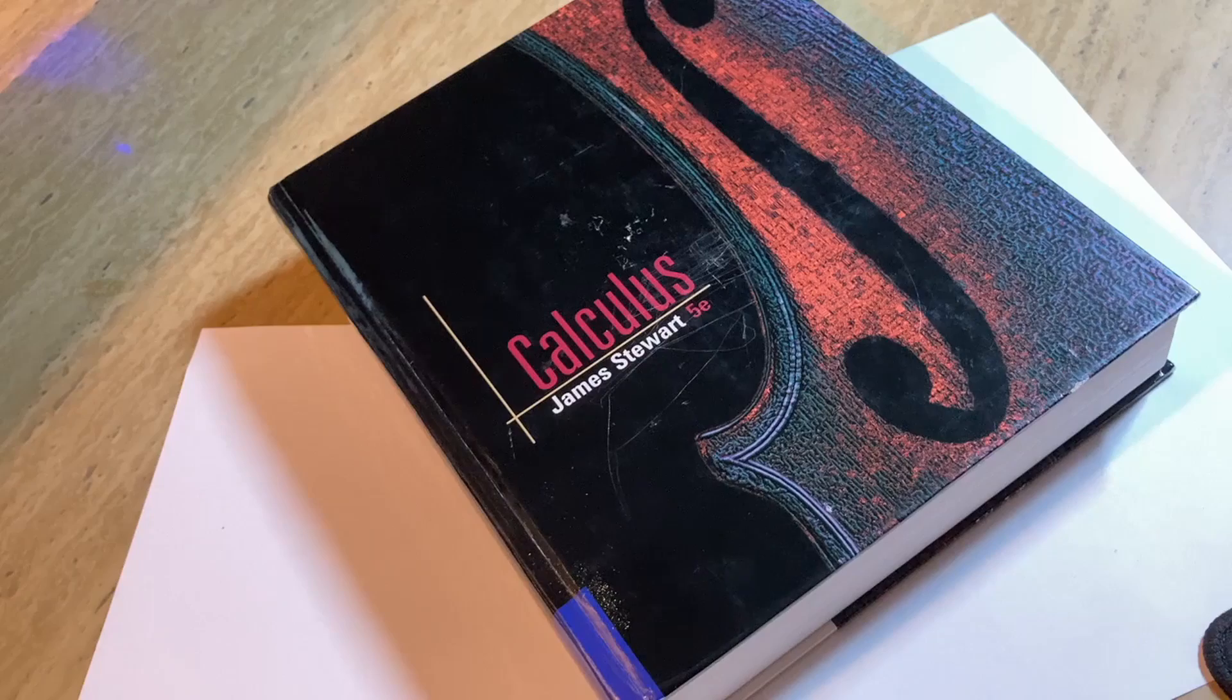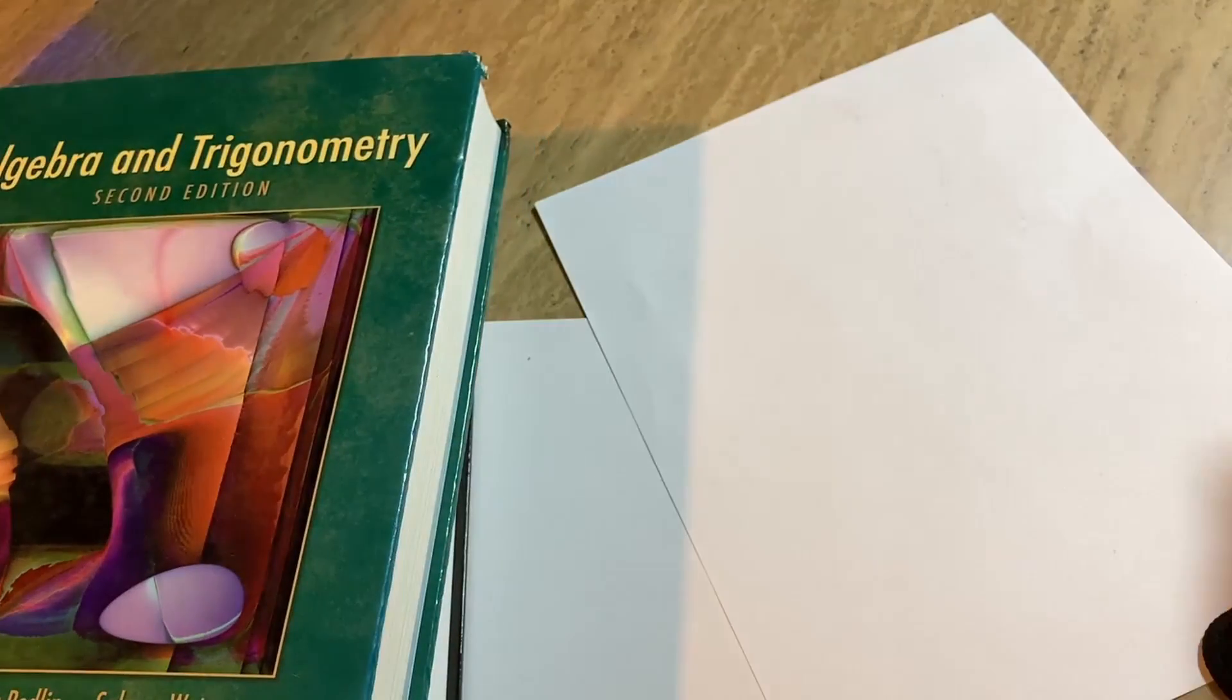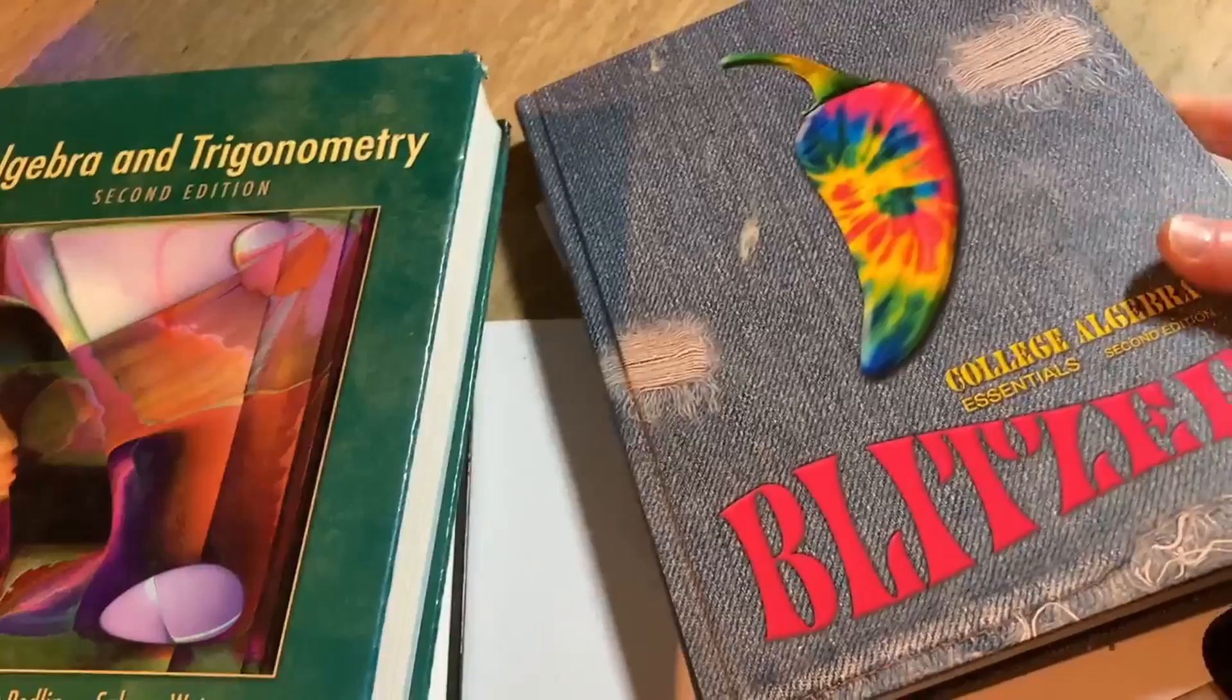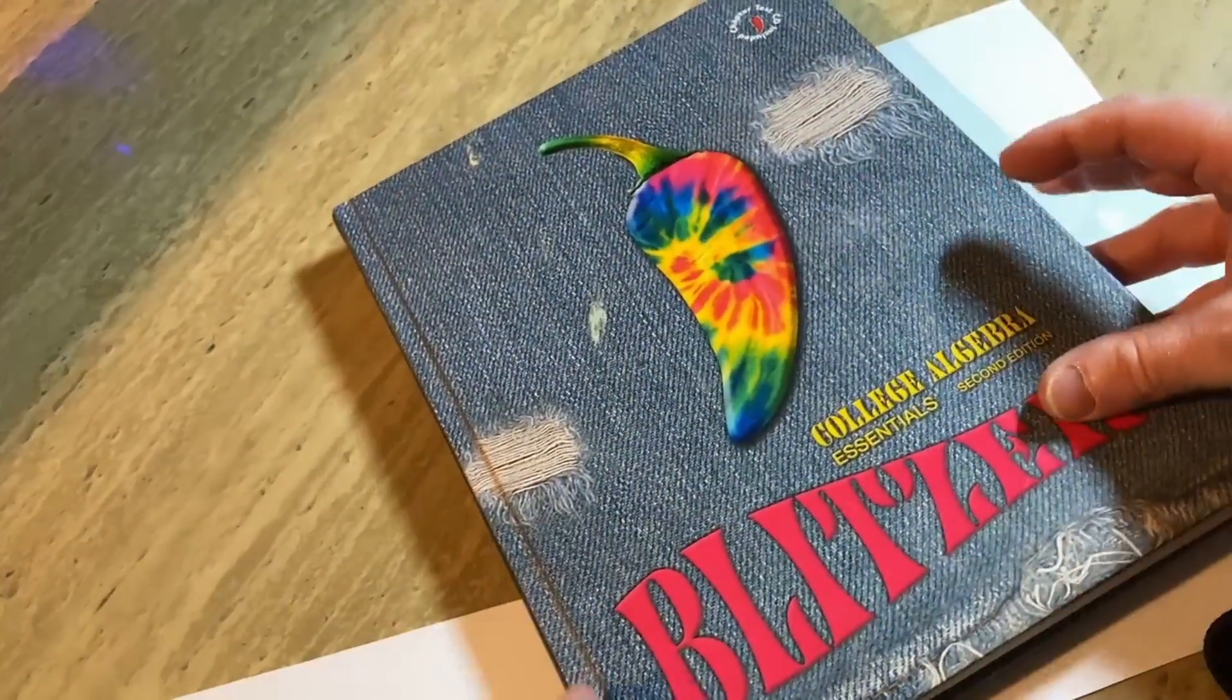Let's start with the very beginning. Let's take a look at the Blitzer book. This is a book that you would use if you were to take a college algebra course here in the United States in college. You would cover quite a bit of the material.